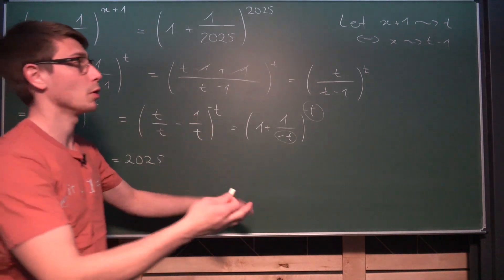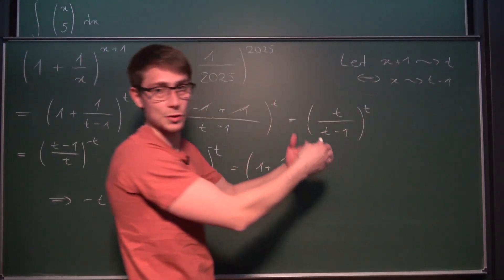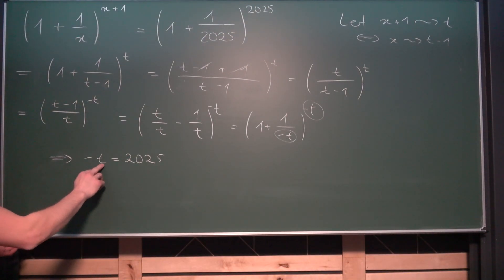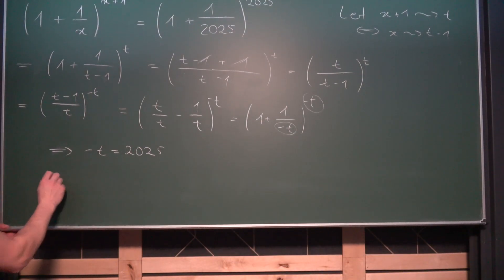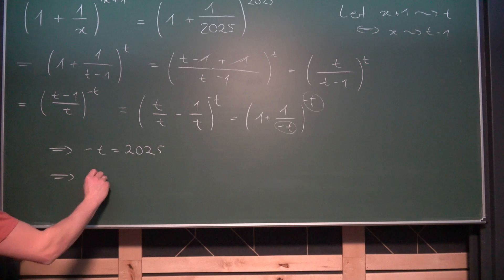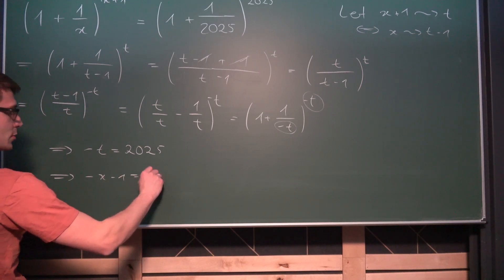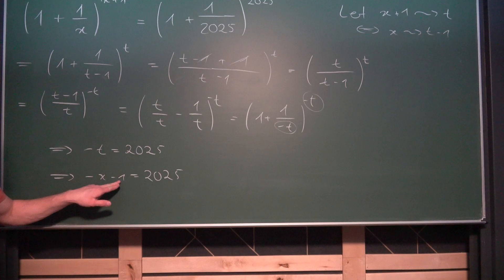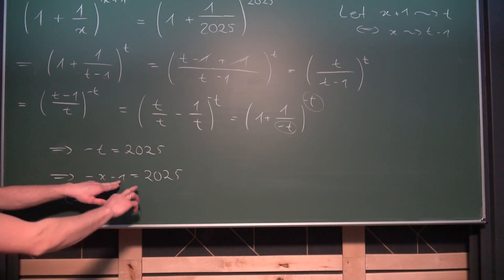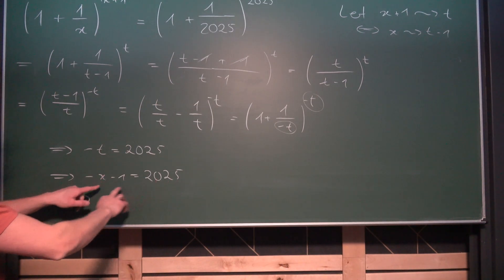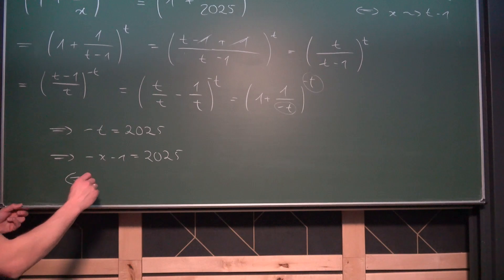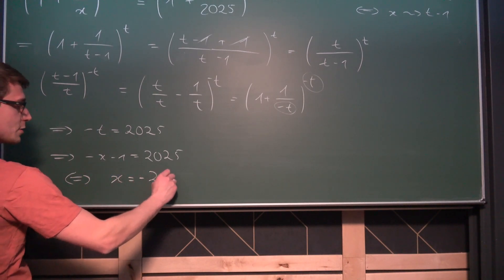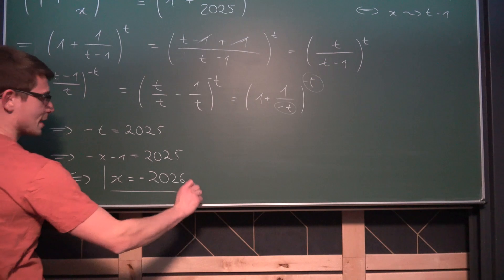Now we want to get back to our original variable x. So t is nothing other than x plus 1. This turns into negative x minus 1 equals 2025. If we add 1 on both sides we get 2026, and then by multiplying both sides by negative 1, we get that x equals negative 2026. This is our solution.